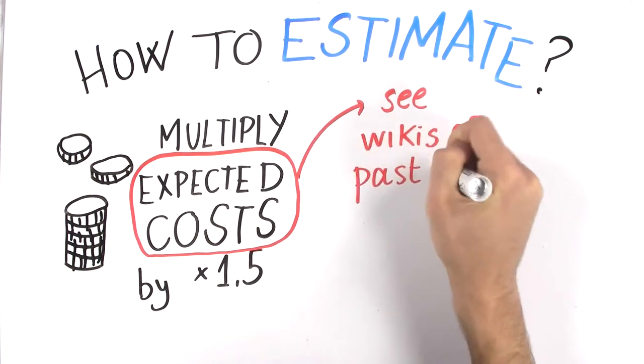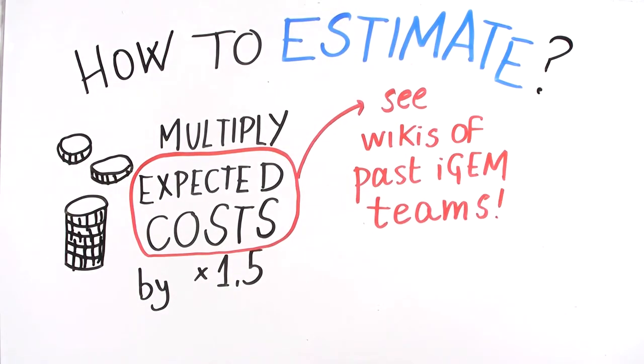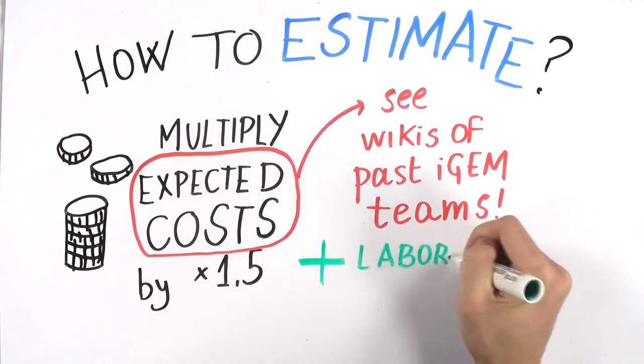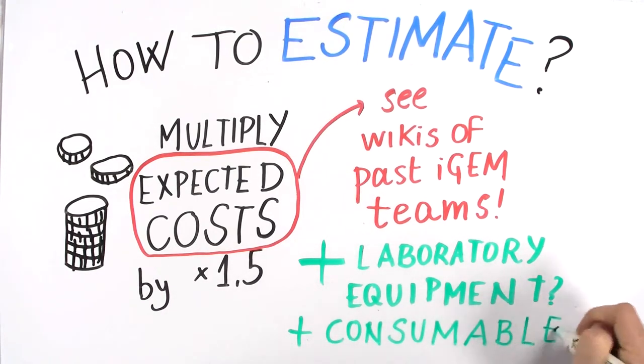One big aspect is the size of your team since travel and registration expenses increase as the size of your team increases. You also have to consider if you have all of the laboratory equipment and consumables or if you need to buy them. The more complex equipment you need, the higher the cost of your project.